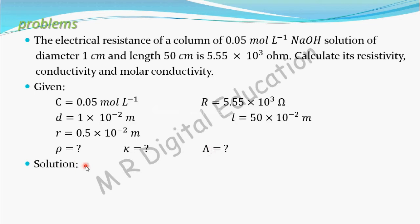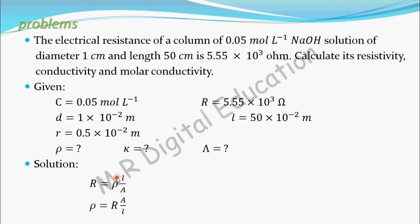You know that resistance R is equal to rho into L by A. In this, resistance is known, length is known, and area is given as a column, so its cross-sectional area is pi R squared. From the diameter you can find the radius, which is 0.5 into 10 to the power minus 2. So pi into R squared gives the area. With area, length, and resistance all known, you can find resistivity.